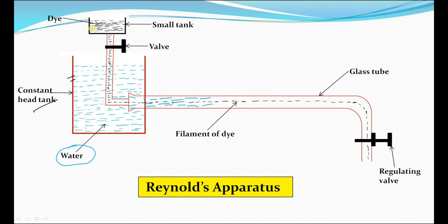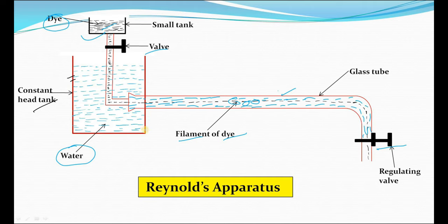Here is my second tank — the small one. In this tank there is a dye, so we can also call it the dye container. This is the glass tube, and this black filament you are seeing is a filament of dye. Here is a regulating valve which regulates the flow of water, and here is another valve which regulates the flow of dye.